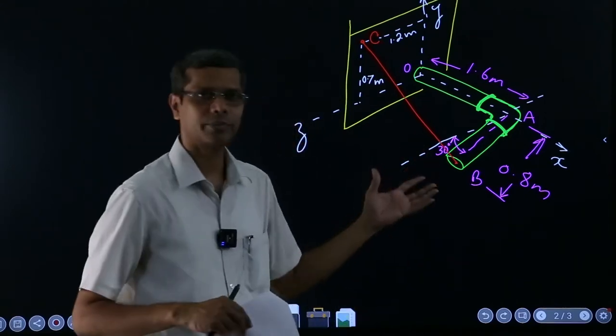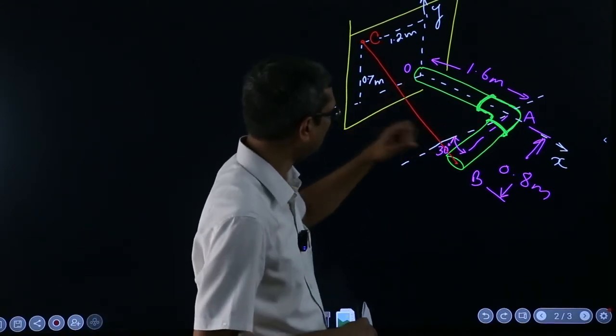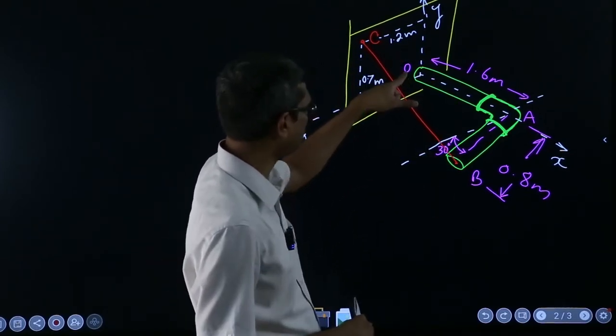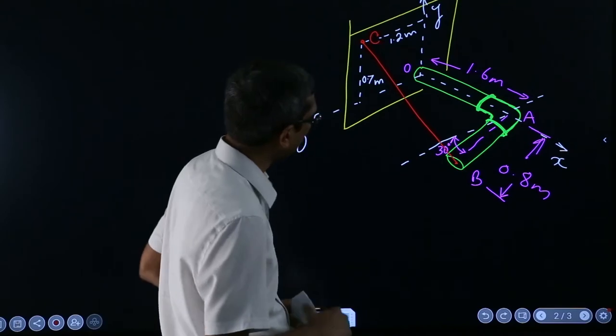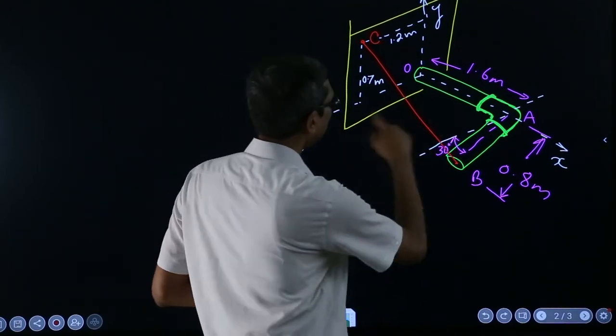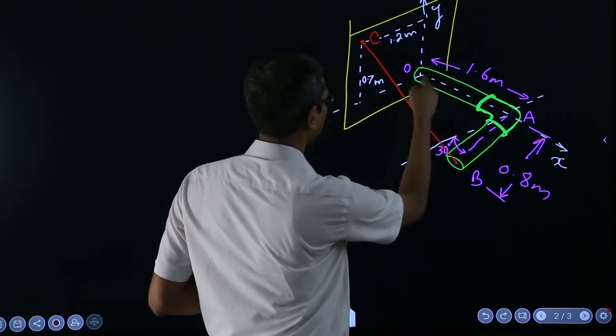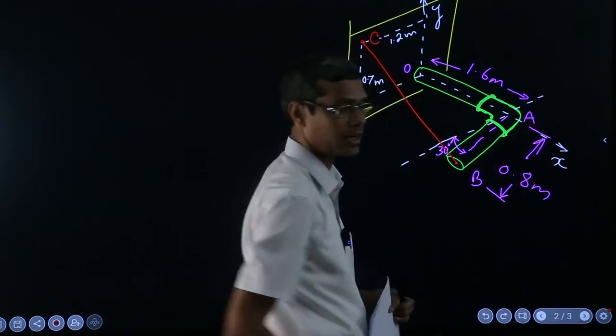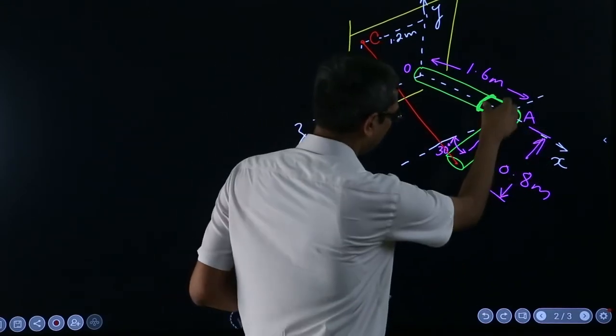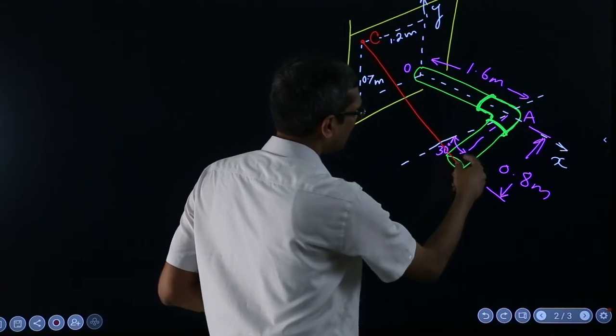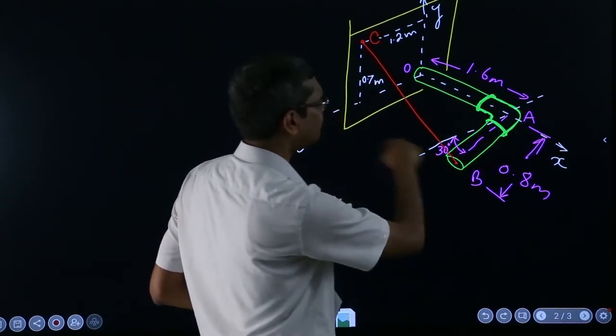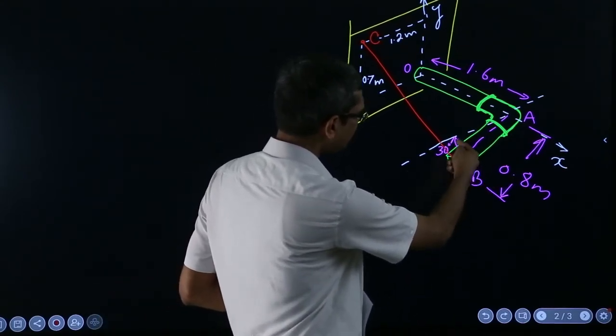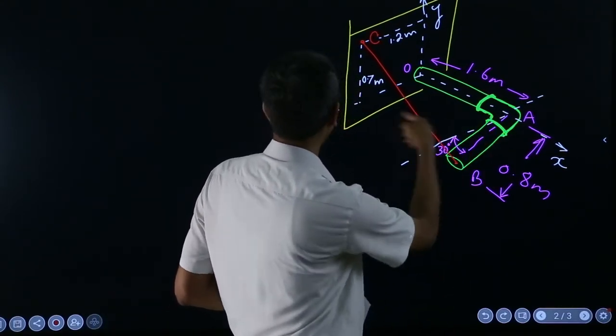In this case, let me explain the problem. There is a pipe like that which is connected to a wall at point O. First understand this is the x direction, this is the y direction, and this is the z direction. The pipe's horizontal portion is coming in the x direction, then there's a 90 degree turn in the pipe. This segment is not in the x-z plane but is tilted by 30 degrees with a line parallel to the z axis.